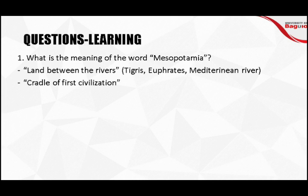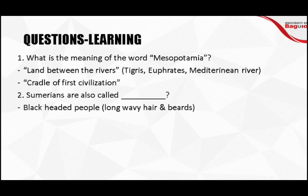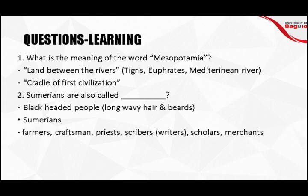The first civilization to settle in Mesopotamia is the Sumerian civilization. Sumerians are also described as 'black-headed people' — not because of skin color, but because of their long wavy hair and thick beards. The same description applied to women, who had long wavy hair. Sumerians were the first to settle in Mesopotamia and were quite skilled in farming and craftsmanship, creating tools useful for farming, building homes, and other purposes.